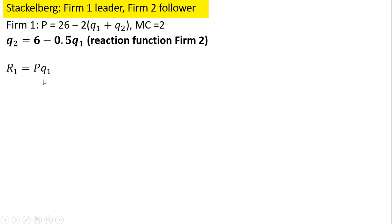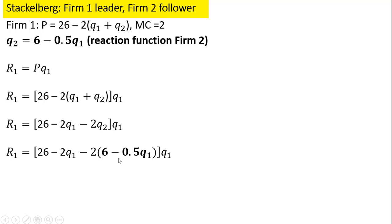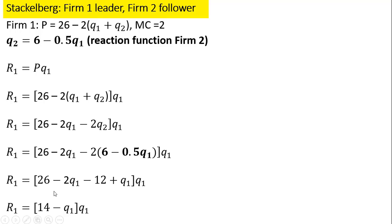Once again we get firm 1's revenue — price times quantity — substituting in the inverse market demand and simplifying. Where we have Q₂, we plug in firm 2's reaction function. So for Q₂ I plug in 6 minus ½Q₁. Simplifying: minus 2 times 6 is minus 12, and minus 2 times negative 0.5 is plus 1, plus Q₁. Further simplifying: 26 minus 12 is 14, and minus 2Q₁ plus Q₁ is minus Q₁. After multiplying Q₁ through the brackets, we have the revenue expression.